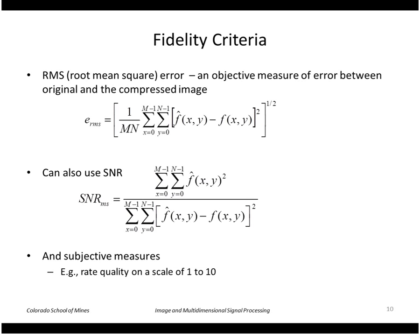Real quick we can measure the fidelity of our reconstructed image using these measures. Root mean square as shown here or the signal-to-noise ratio as shown here. Or there are some subjective measures, for example, rating the quality of the reconstructed image on a scale of 1 to 10.